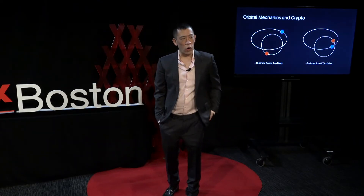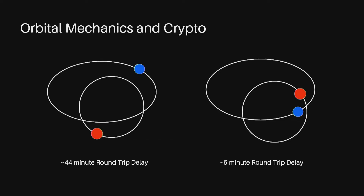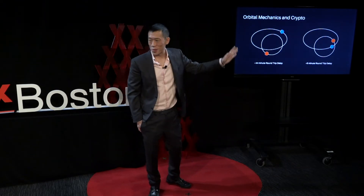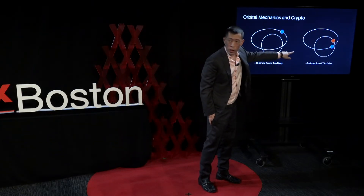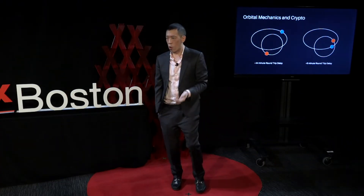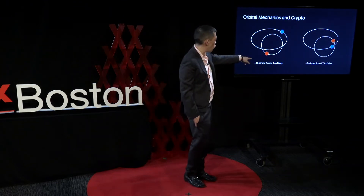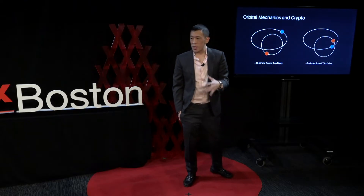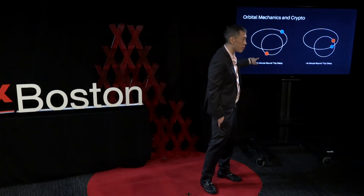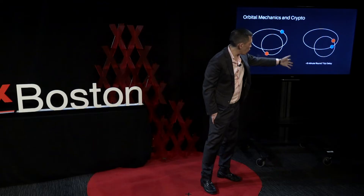On screen you can see two diagrams showing how Earth and Mars move over a 2.2-year period. Sometimes they're really far apart — that's just how the orbits work. During that 2.2-year cycle, sometimes they're really close. When they're at their farthest, the speed of light means it takes 44 minutes round-trip to communicate between the two planets. That's the minimum time needed to ensure the ledgers are synced between the two worlds.